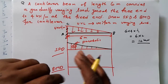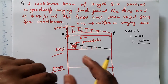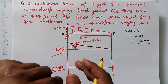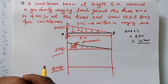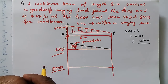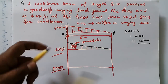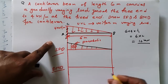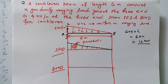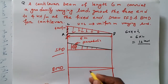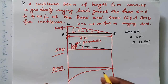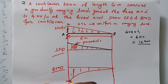Remember: whenever the shear force diagram is parabolic, the bending moment diagram will be a cubic curve. So if the shear force diagram is parabolic, the bending moment diagram would be a cubic curve. Let me show you how to draw this cubic curve.